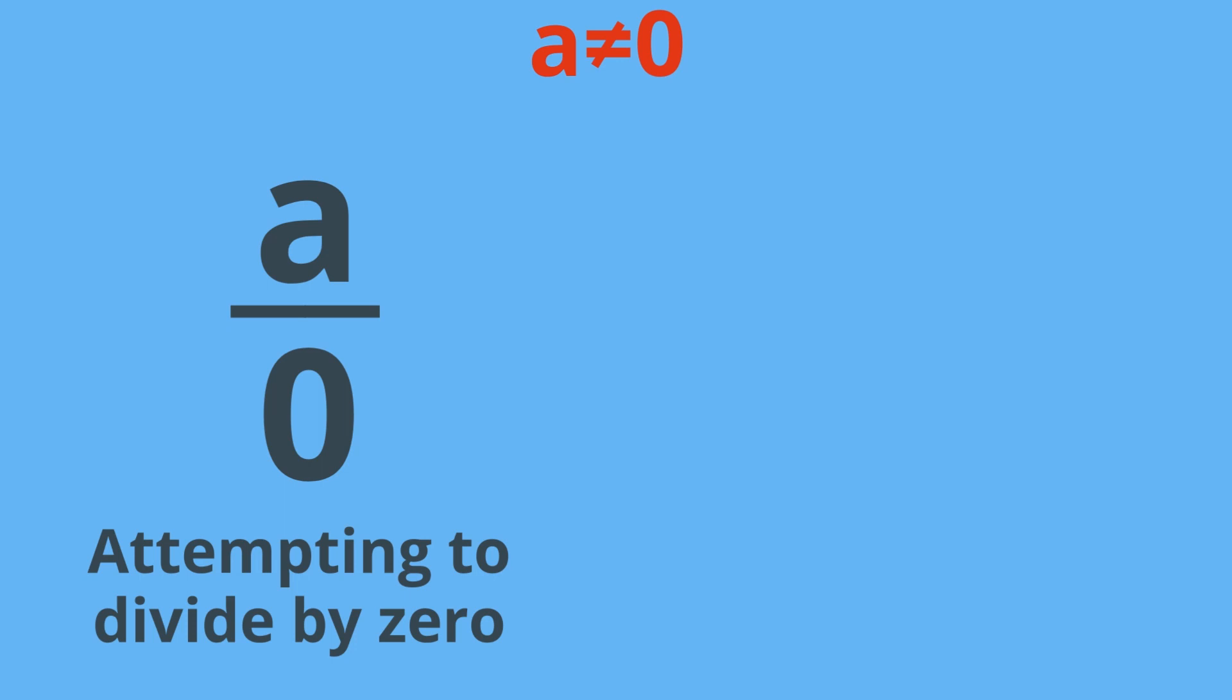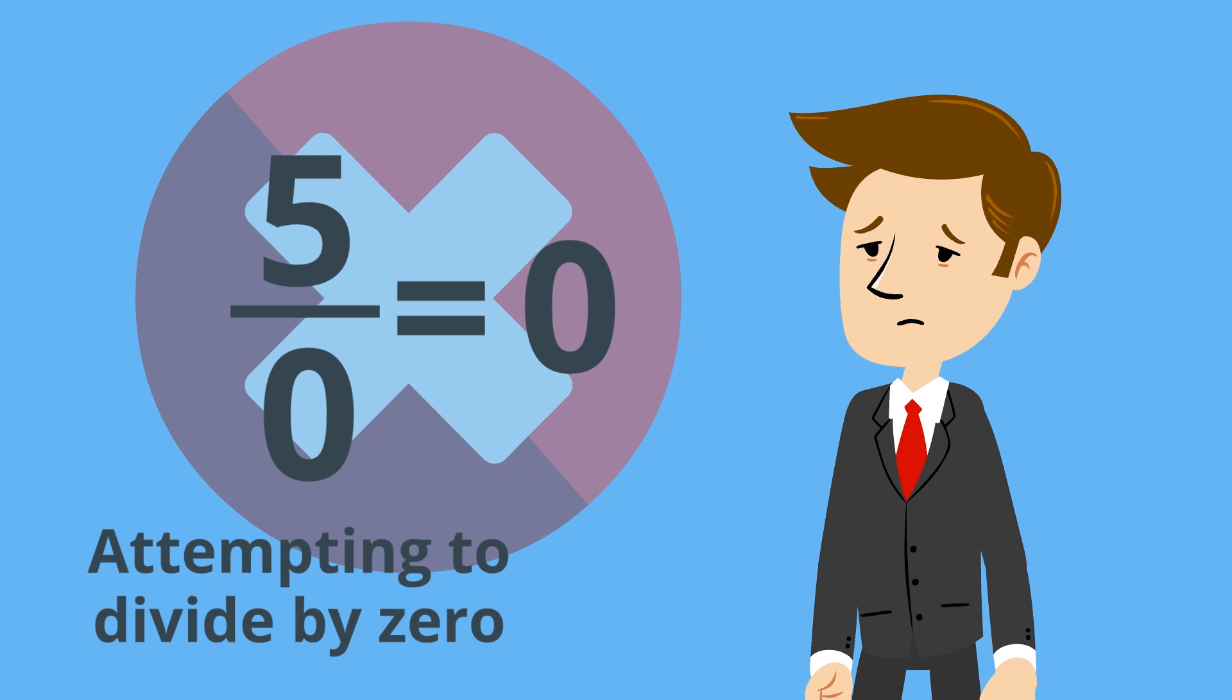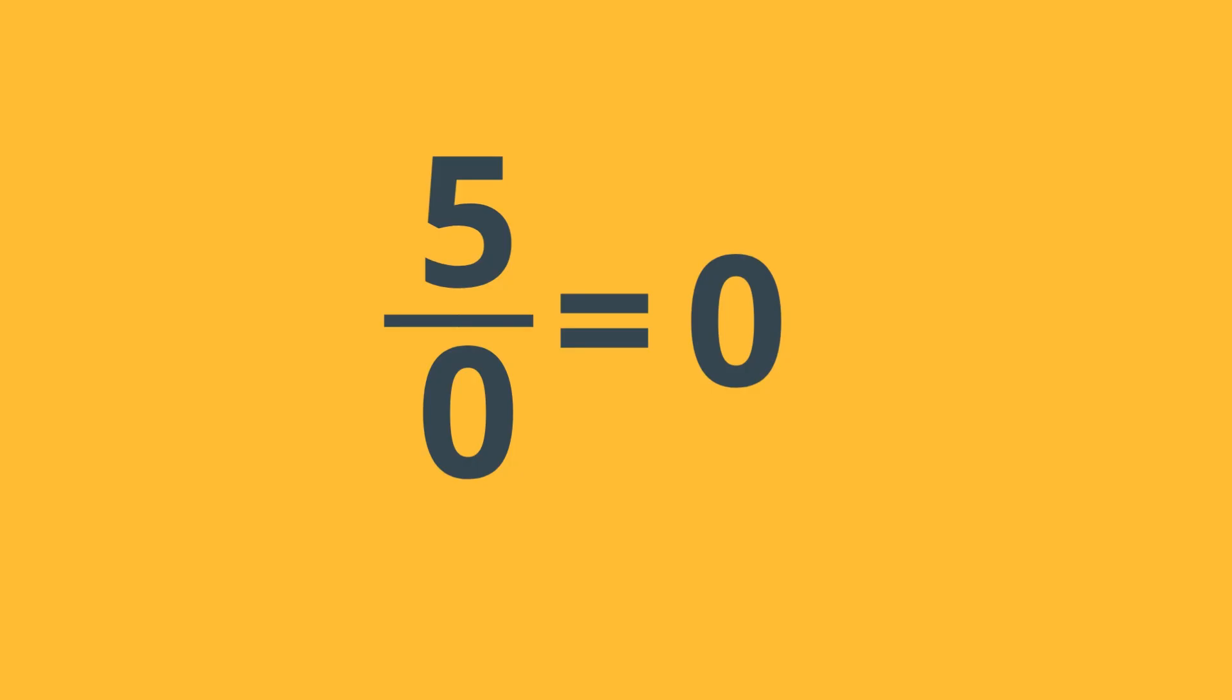In this case, we might attempt to give it a value of, say, zero. So for five divided by zero, we'll just call this zero. But unfortunately, this doesn't work. It doesn't fit with all of our other previous rules. Multiplication and division are opposites. So in a way, this statement is just another way of saying that five is equal to zero times zero. And that is definitely not true.